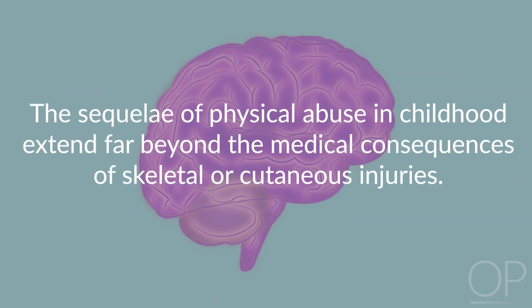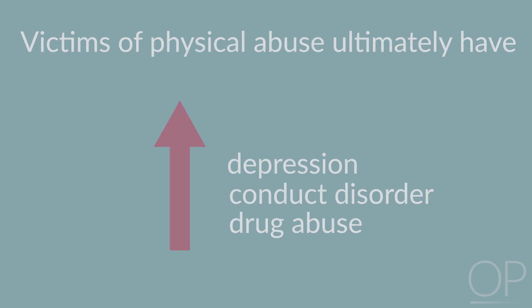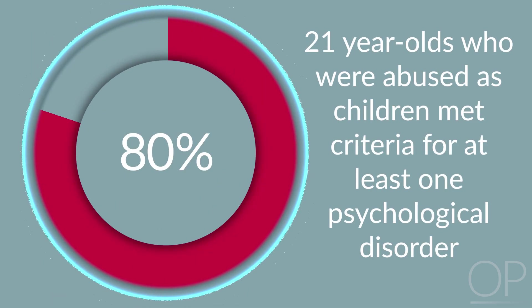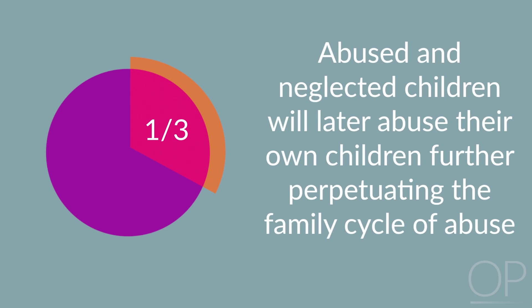The sequelae of physical abuse in childhood extend far beyond the medical consequences of skeletal or cutaneous injuries. Victims of physical abuse ultimately have higher rates of depression, conduct disorder, and drug abuse. In one study, about 80% of 21-year-olds who were abused as children met criteria for at least one psychological disorder. Nearly one-third of abused and neglected children will later abuse their own children, further perpetuating the family cycle of abuse.